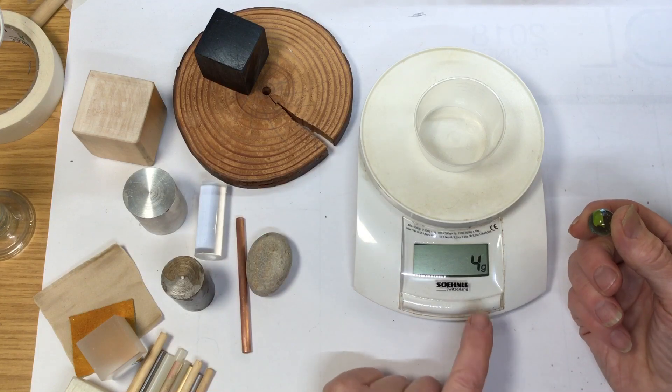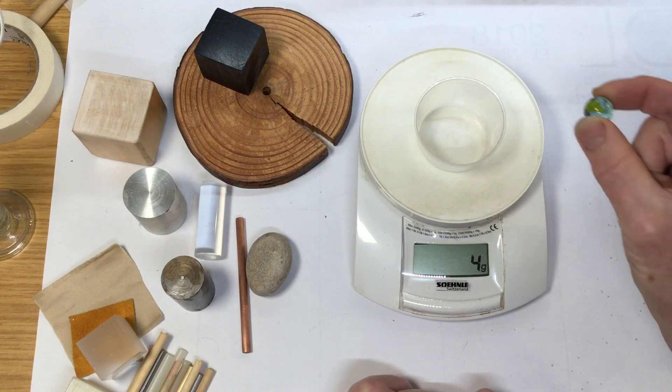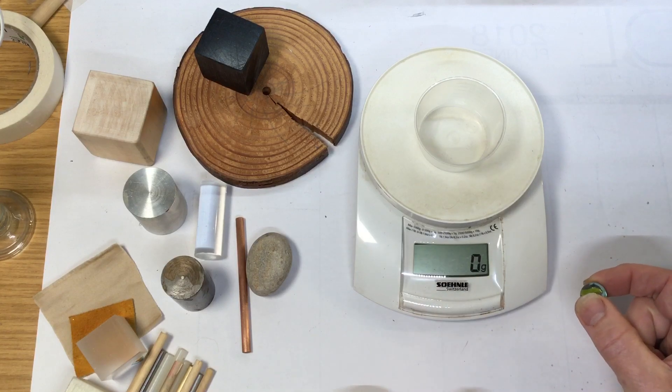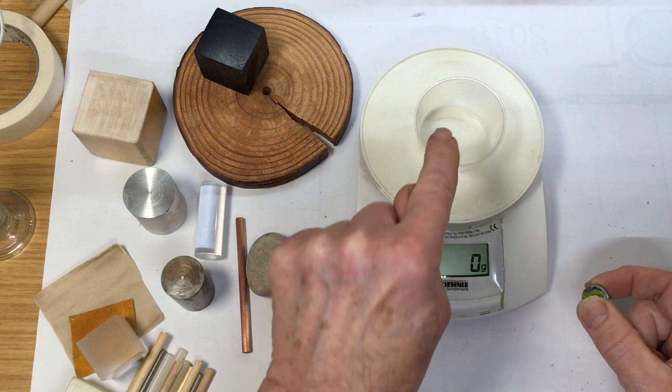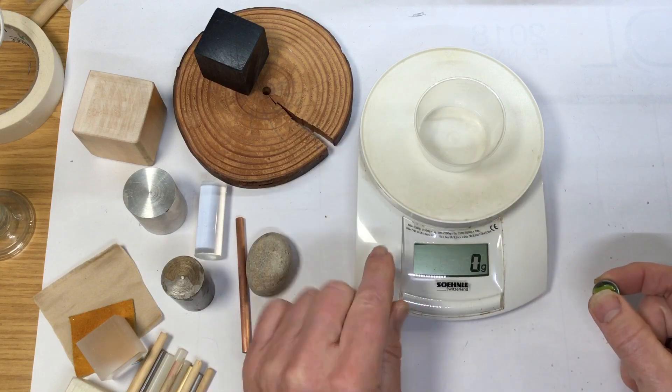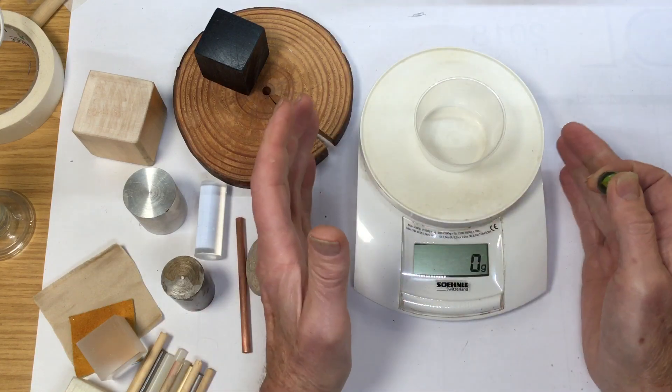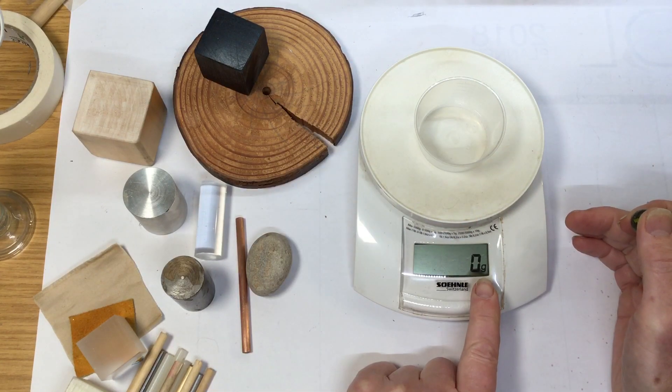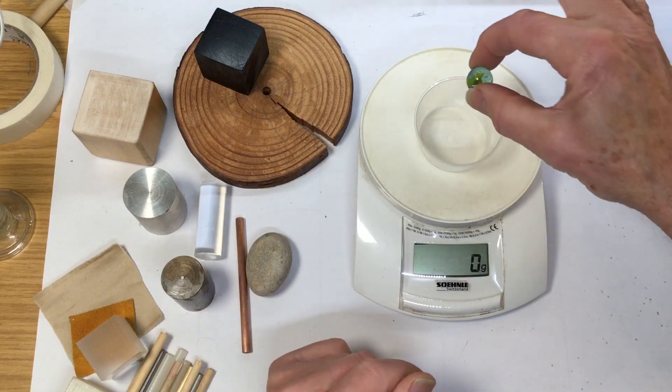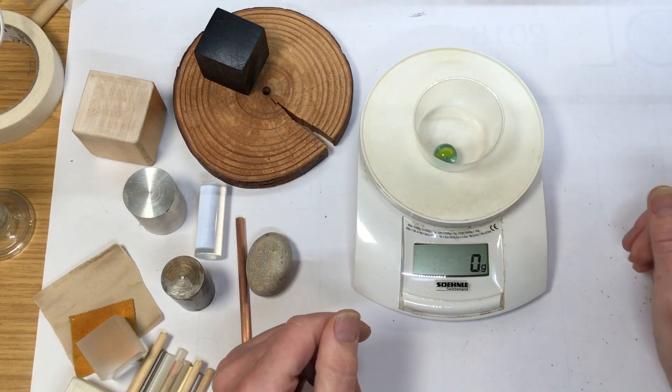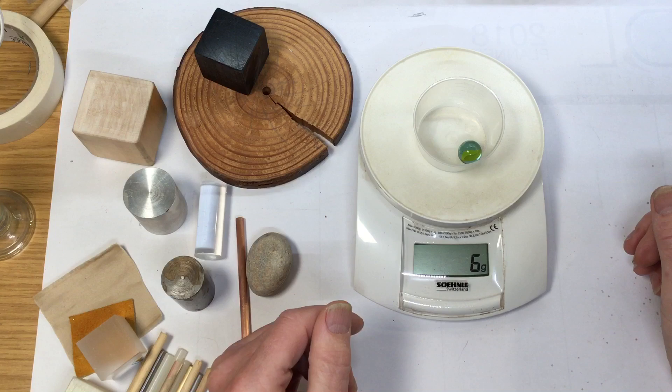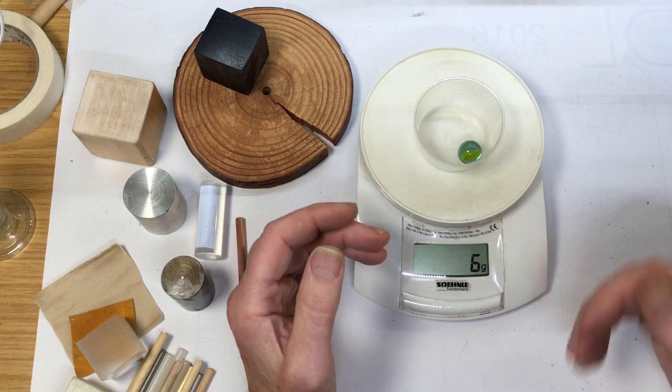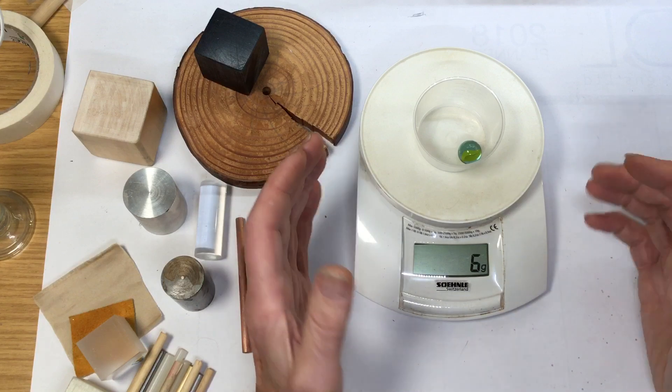Put the marble in - no, wait, let's just press the button again. Zero. So what it's doing is recalculating - the whole scale pan and whatever you've just put on it has zero mass. It's done the subtraction for you. Now when you put the marble in: six grams. The tare feature is very useful.